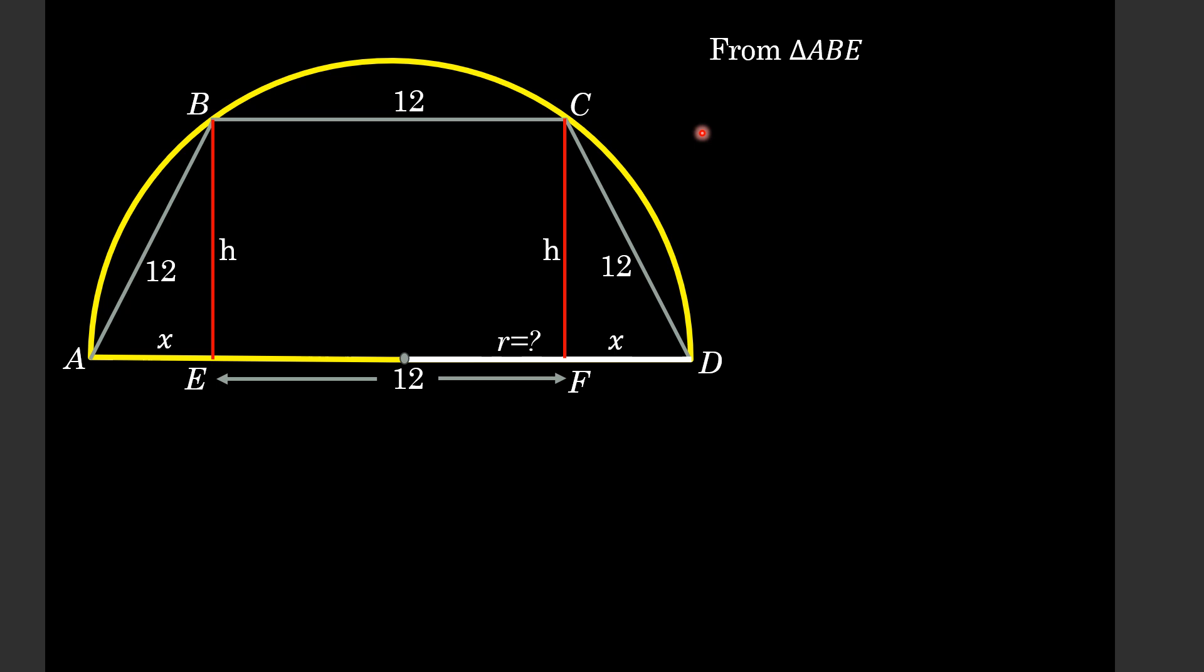We can write that h² + x² = 144. Let we call this equation as equation number 1.